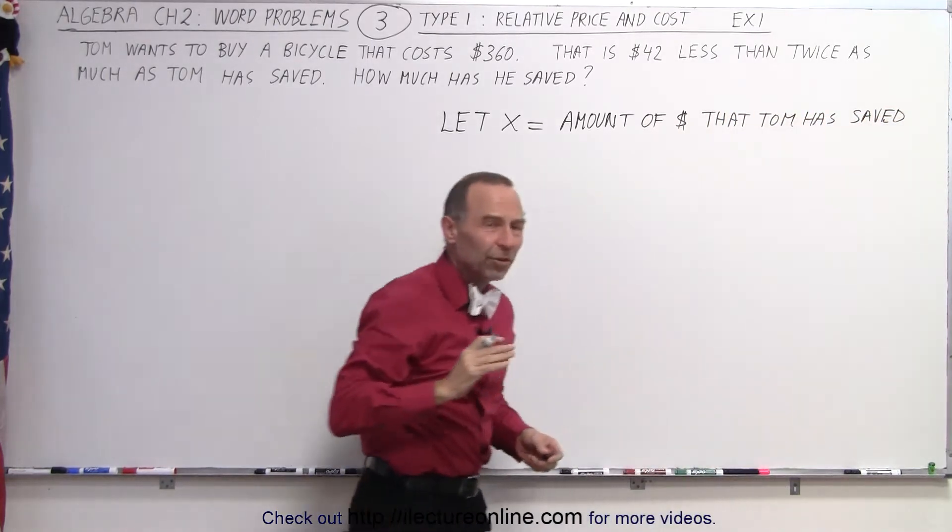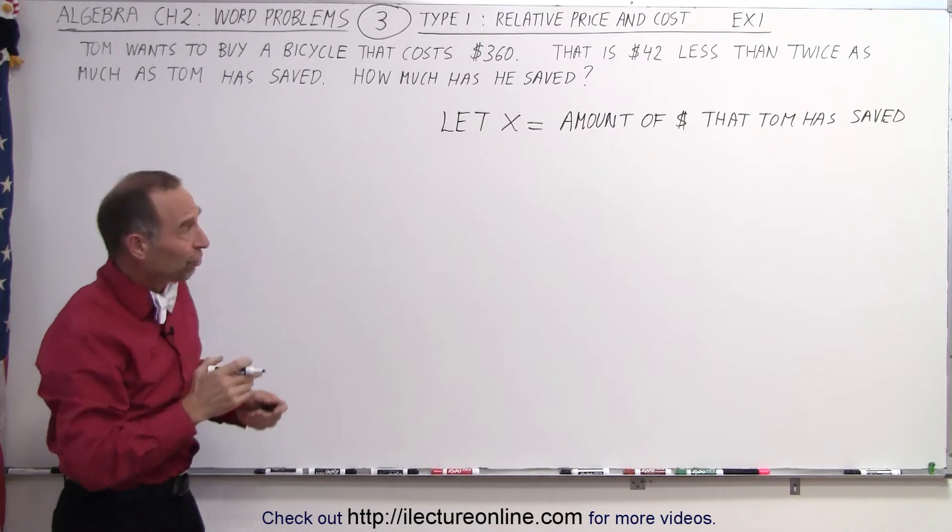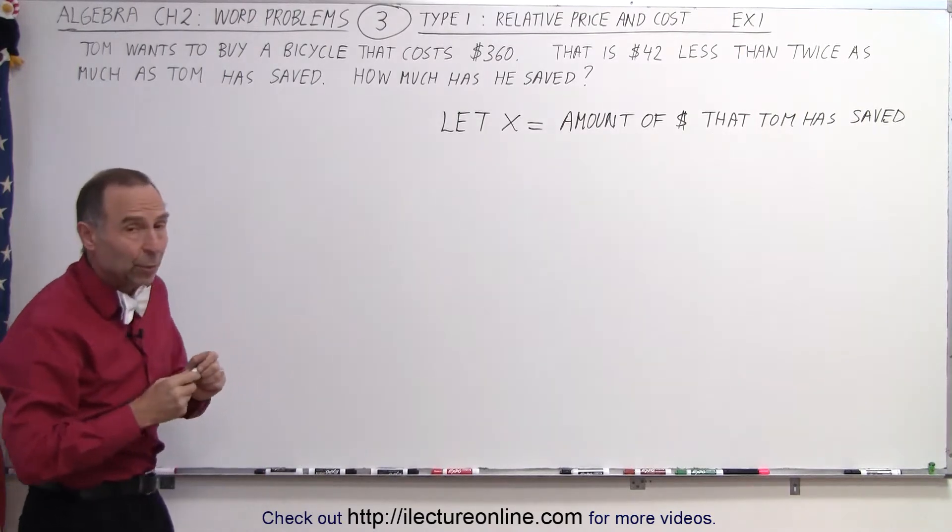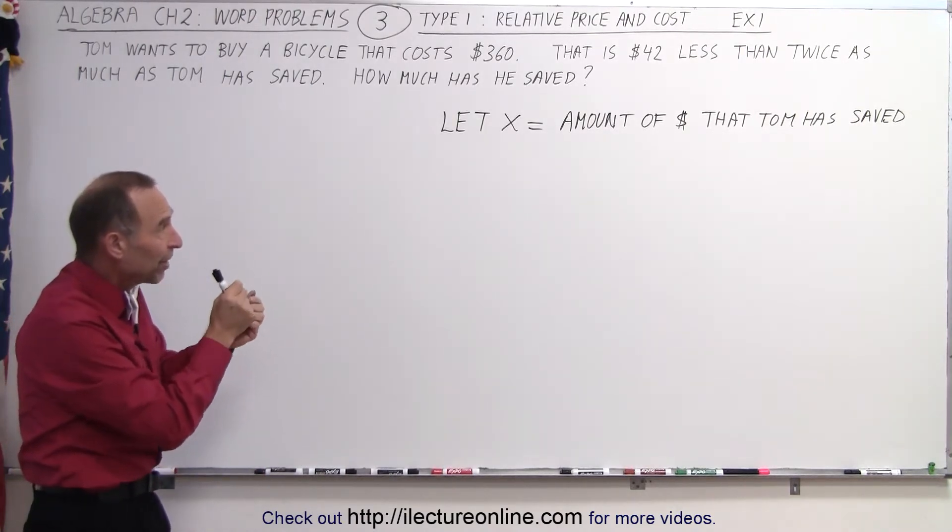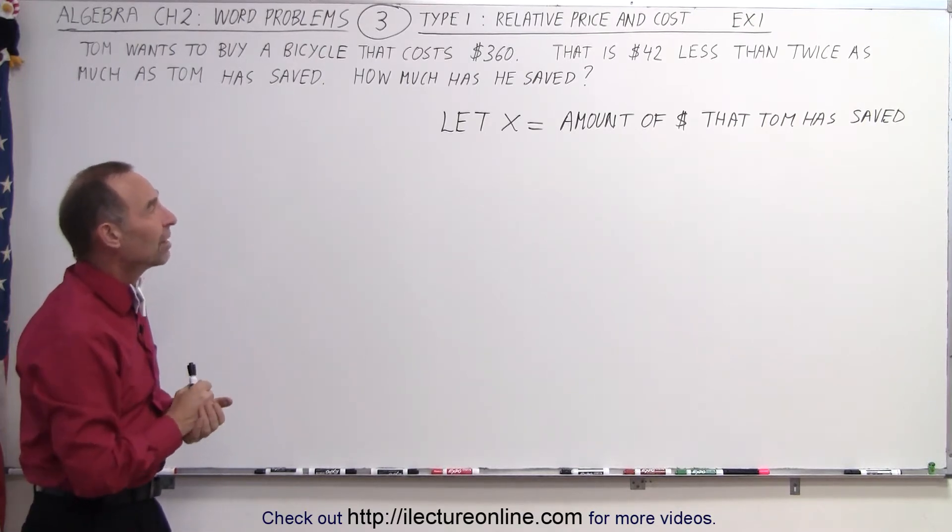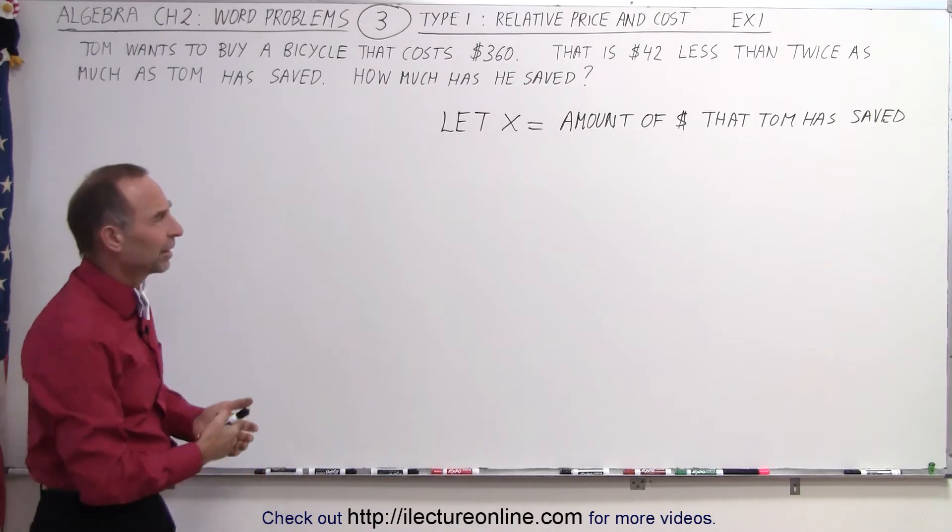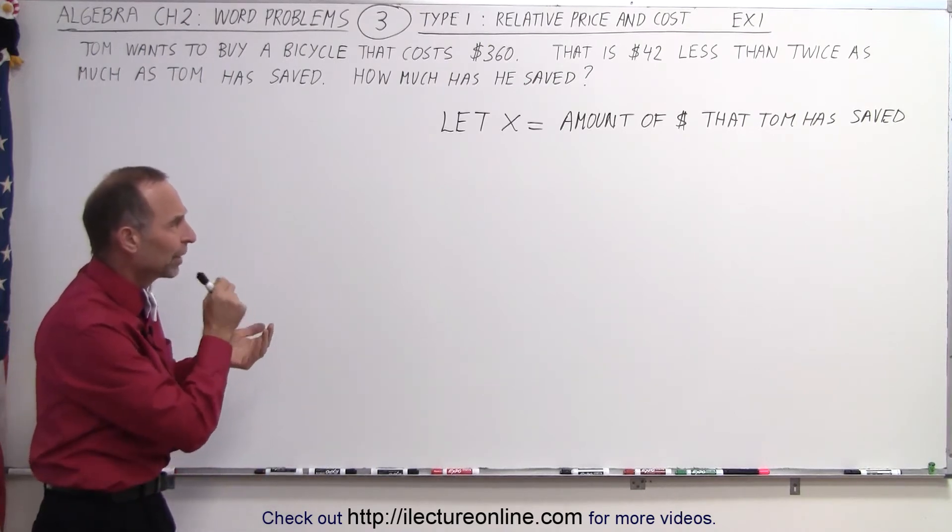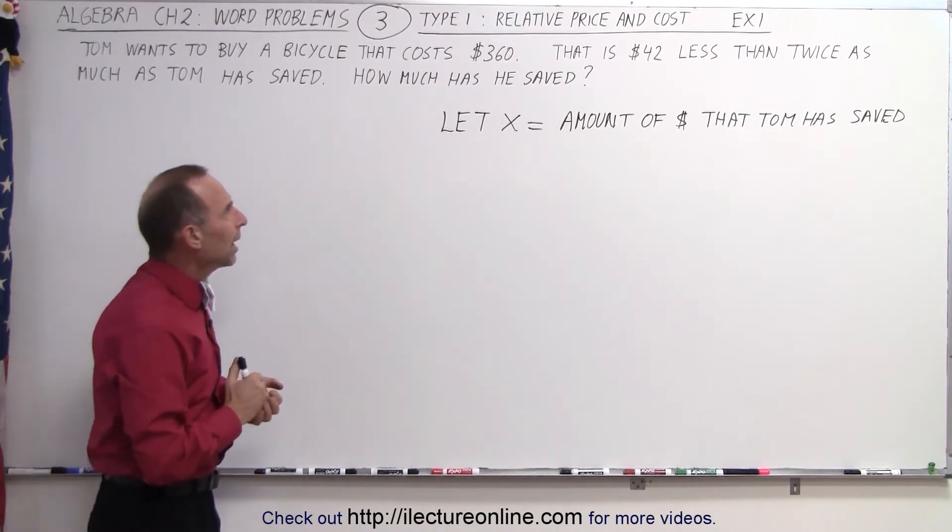Notice how that statement is fairly descriptive. It says exactly what it means that X represents the amount of dollars, the amount of money that Tom has saved. Don't say let X equals Tom or something like that. Just be very descriptive what X represents.